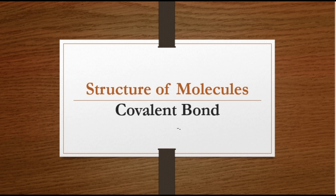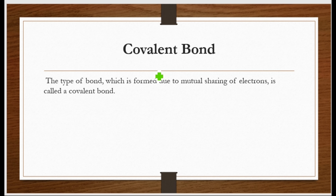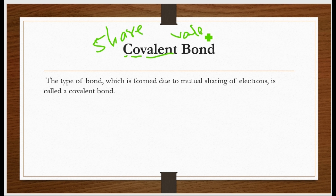Covalent bond. By word, we will see what it means. Co means joint, sharing. Valent means the last electron. So it means the last electrons shared by the electrons — covalent bond.